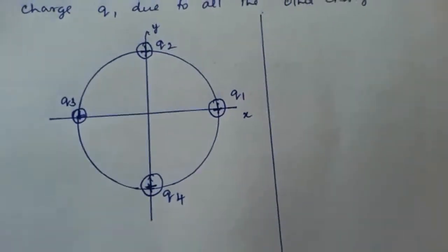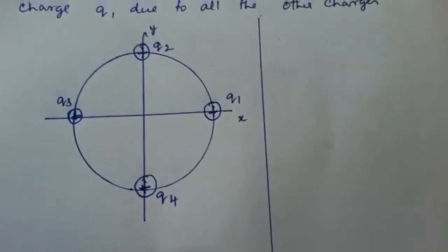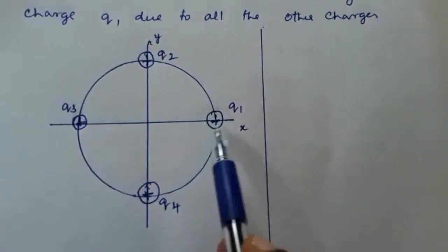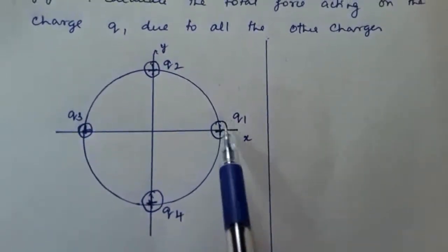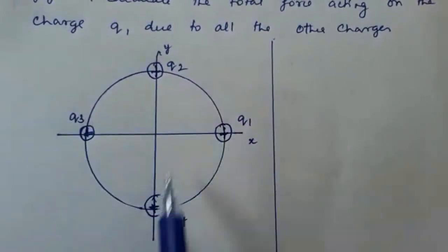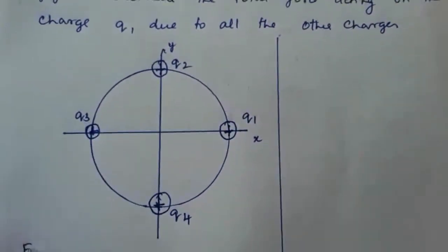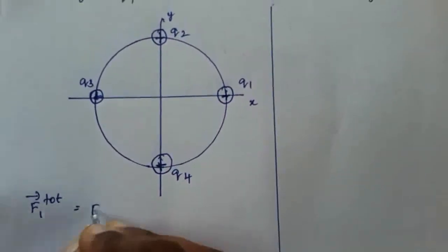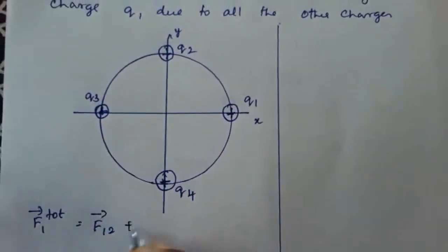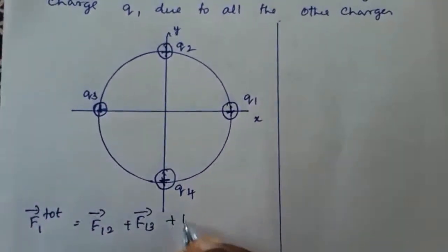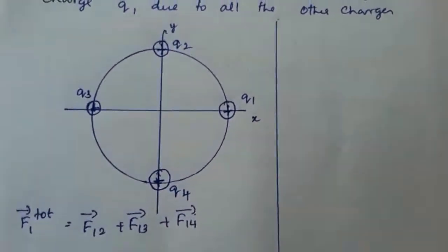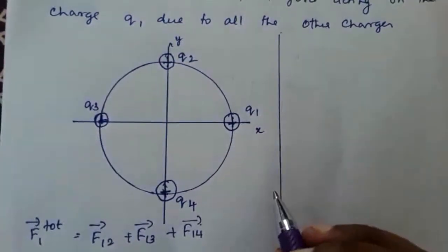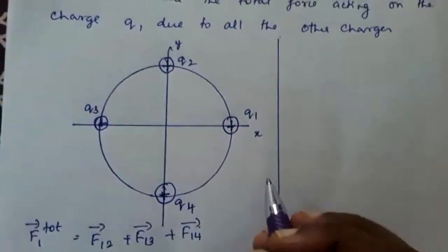Here we have to use the superposition principle. According to the superposition principle, the total force acting on Q1 is due to Q2, Q3, and Q4. So we can write the total force F1_total is equal to F12 plus F13 plus F14 (vector). Now let us see what the forces F12, F13, and F14 are.